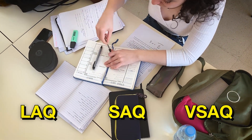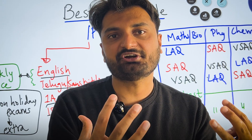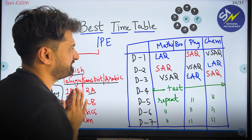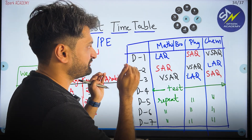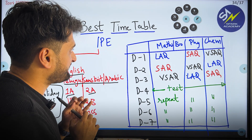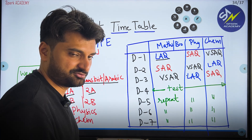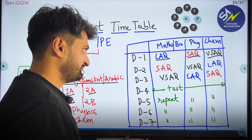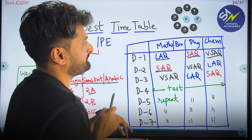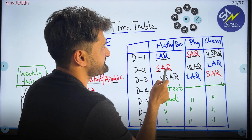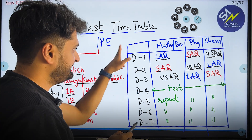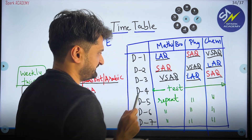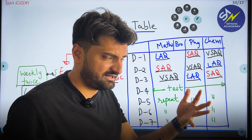My recommendation is: each day, do one type of question per subject. For example, on Day 1 — do LAQs in Maths or Biology, SAQs in Physics, VSAQs in Chemistry. On Day 2 — do SAQs in Maths or Biology, VSAQs in Physics, LAQs in Chemistry. On Day 3 — do VSAQs in Maths, LAQs in Physics, SAQs in Chemistry.